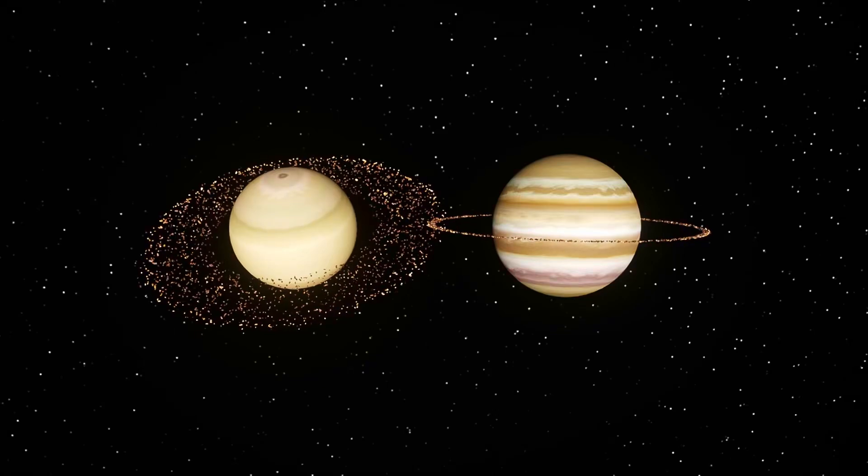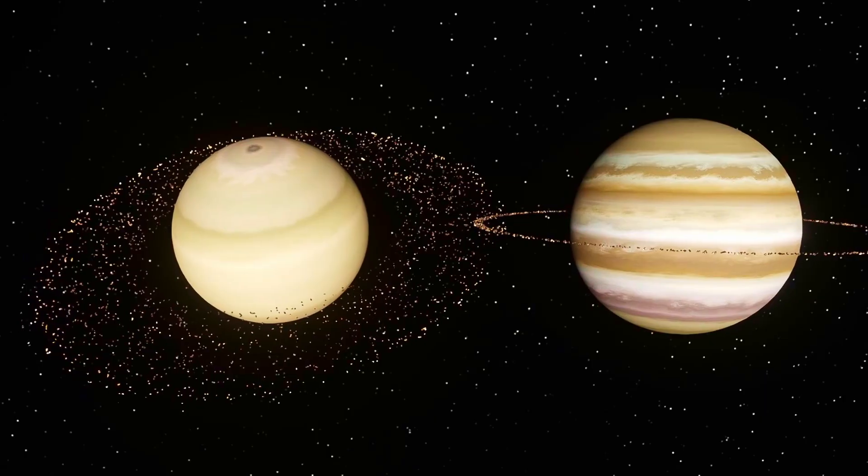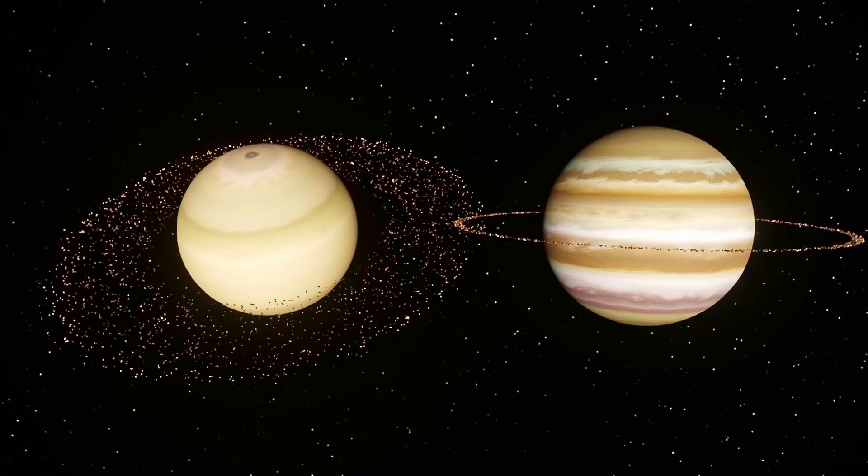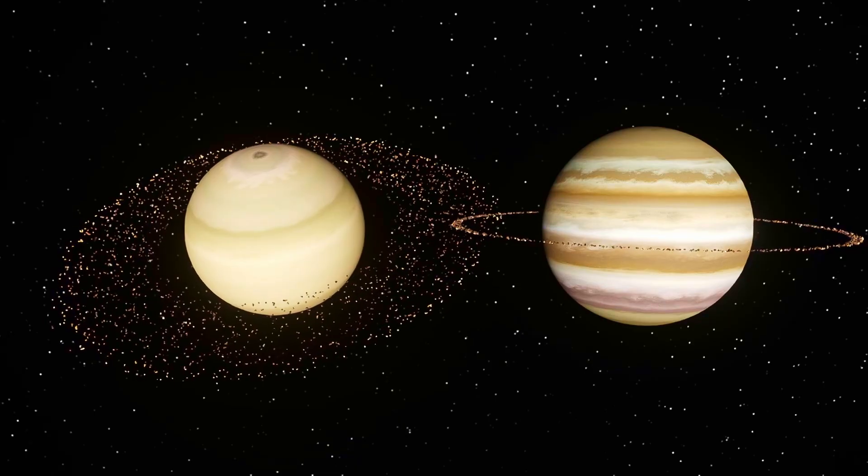Jupiter is a giant of gas, over 300 times Earth's mass. Saturn is lighter, but its massive rings stretch over 280,000 kilometers. If these worlds moved on a crash course, space itself would tremble.